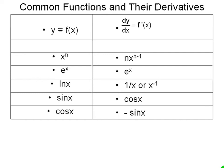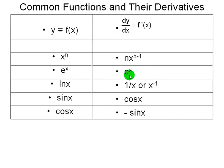This chart shows some common basic functions and their derivatives, which I talked about in previous videos. The polynomial is a monomial — just one term, x to the n — and you find the derivative by multiplying by the exponent and decreasing the exponent by 1. If the function is e to the x, the derivative is simply e to the x. And ln x has an interesting derivative: it's equal to 1 over x, or x to the negative 1.